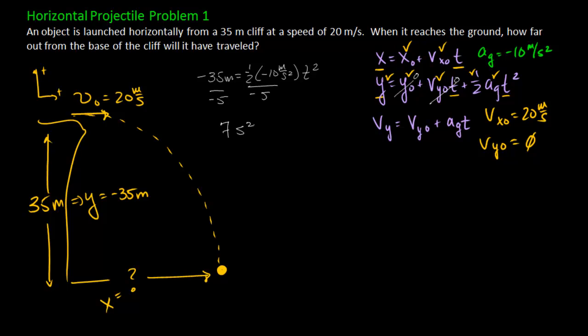The meters will cancel out. 7 seconds squared equals t squared. By square root both sides, I get the time it takes for this object to be launched and get all the way to the ground, to fall 35 meters, is going to be about 2.65 seconds.